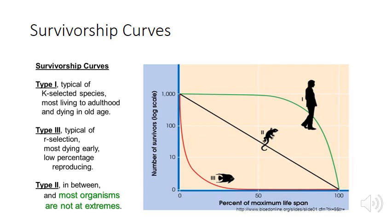A Type 2 survivorship curve shows an even rate of mortality across ages — the mortality rate doesn't really change as individuals age. This is commonly seen in many bird and reptile species. A Type 3 curve shows extremely high mortality in young individuals and then lower and lower mortality as individuals age. A good example is marine fish: mackerel, for example, produce upwards of a million eggs per female, but all but about 10 of those eggs will die within the first 70 days of life.